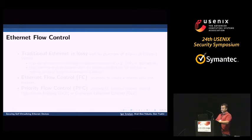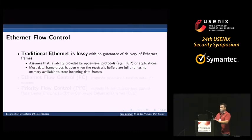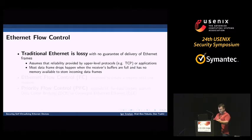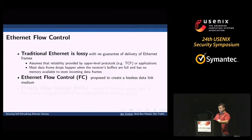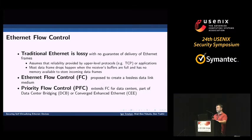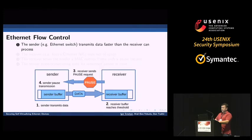Now I will talk about Ethernet flow control. Traditional Ethernet is lossy — there is no guarantee that a transmitted Ethernet frame will be delivered to its destination. The vast majority of drops happen when the receiver's buffers are full and the receiver has no available memory to store incoming data frames. To make Ethernet lossless and reliable, the Ethernet flow control protocol was proposed. There is an extended version called priority flow control, which uses the same mechanism, and in this talk I will refer to flow control to cover both of them.